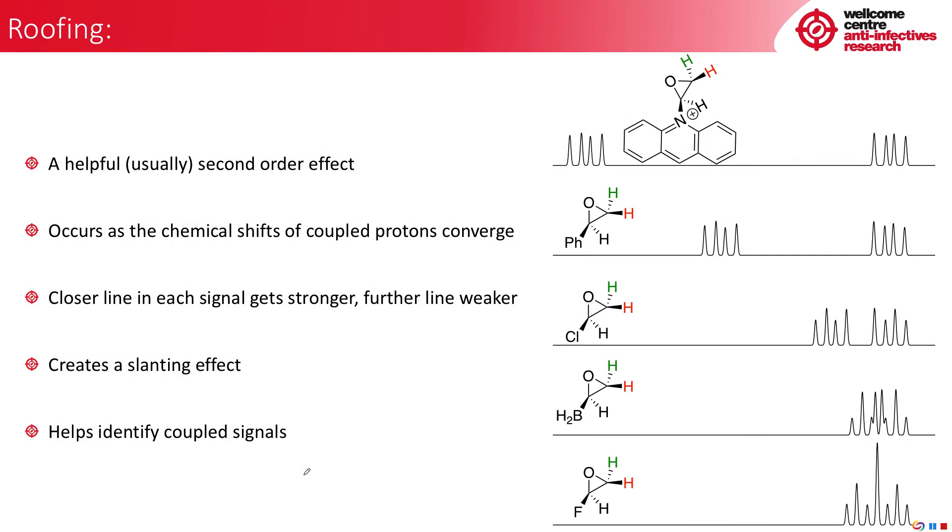So let's start with the first, the more useful of the phenomena that I just mentioned. This is the slanting. This is usually quite helpful, actually. As the chemical shifts with a couple of protons converge, the closer line in each signal to the other gets stronger, and the further line gets weaker. And this creates a slanting effect where they slant towards one another. And you can use this to identify coupled signals.